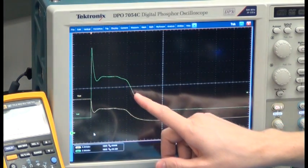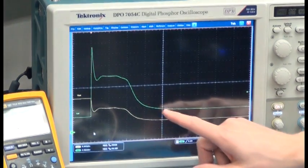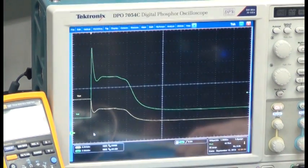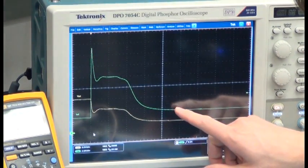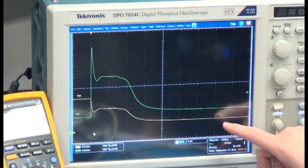So after this 500 microsecond delay in this case, now the output current limit takes over, and the output current comes down to about 3.5 amps, where it's regulating 3.5 amps with the output voltage pulled way down.